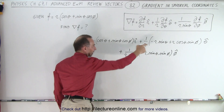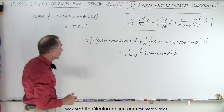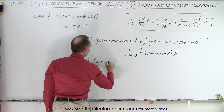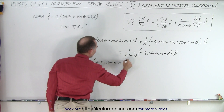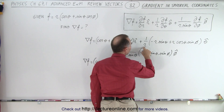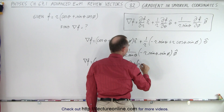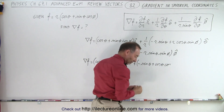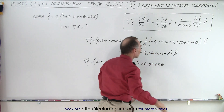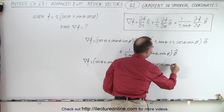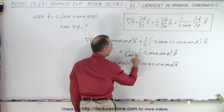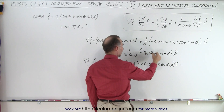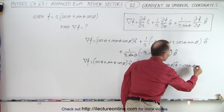Now we put it all together and simplify as much as possible. The gradient of f equals: cosine of theta plus sine of theta cosine phi in the r unit vector direction. For the theta component, the r cancels, giving minus sine of theta plus cosine theta sine of phi in the theta unit vector. For the phi component, the r and sine of theta cancel, leaving minus sine of phi in the phi unit vector.